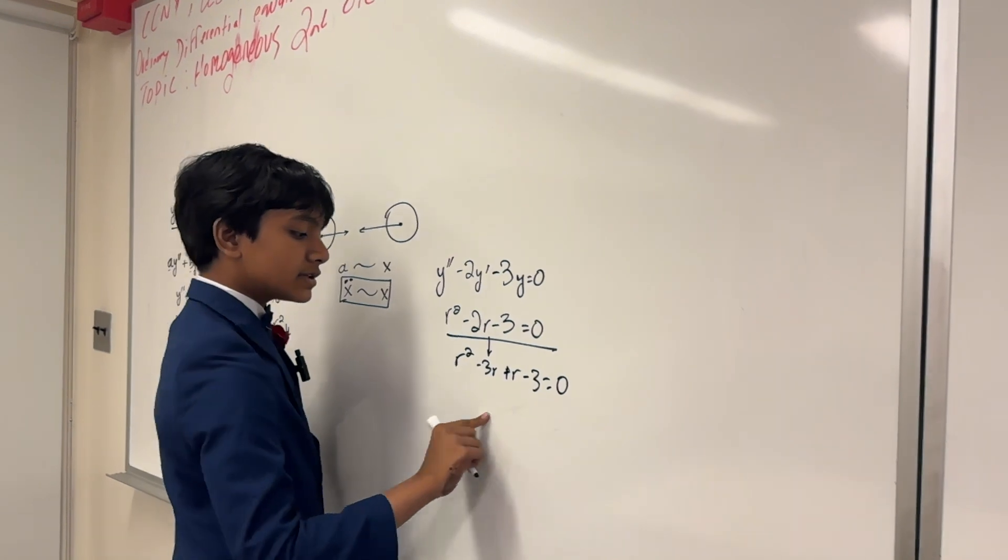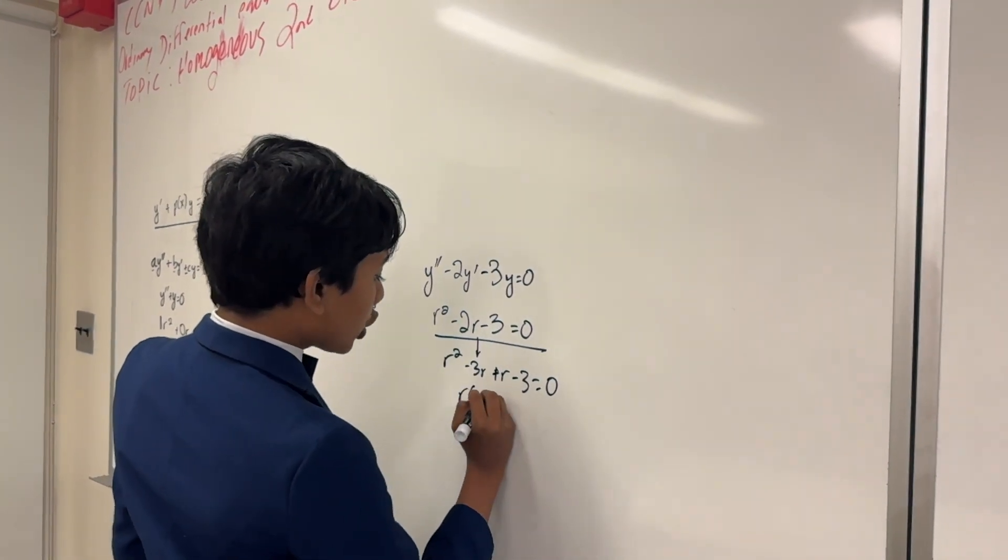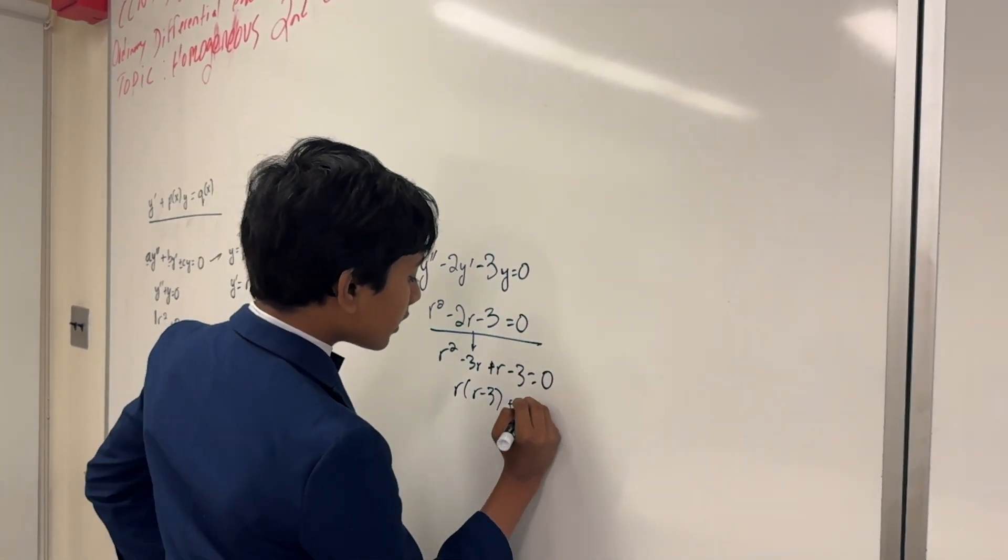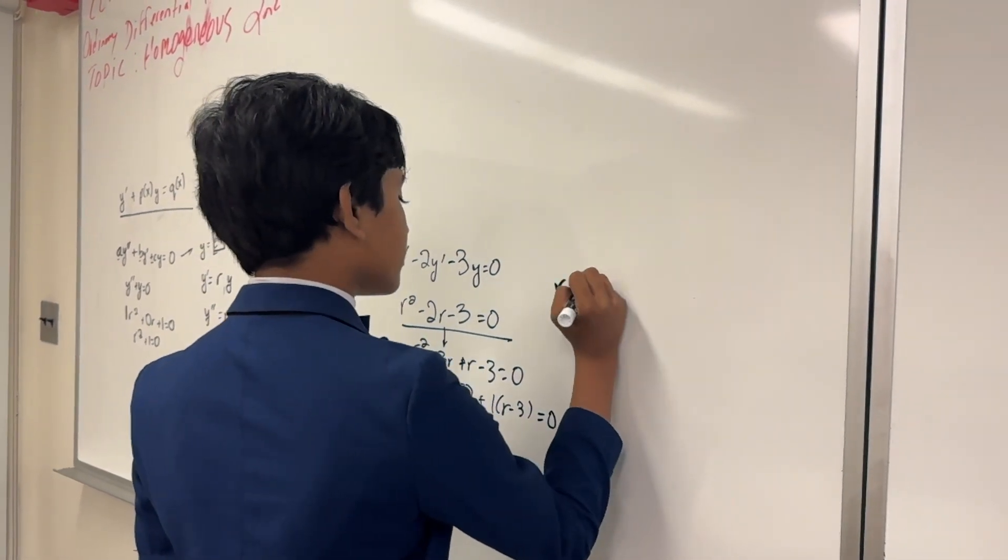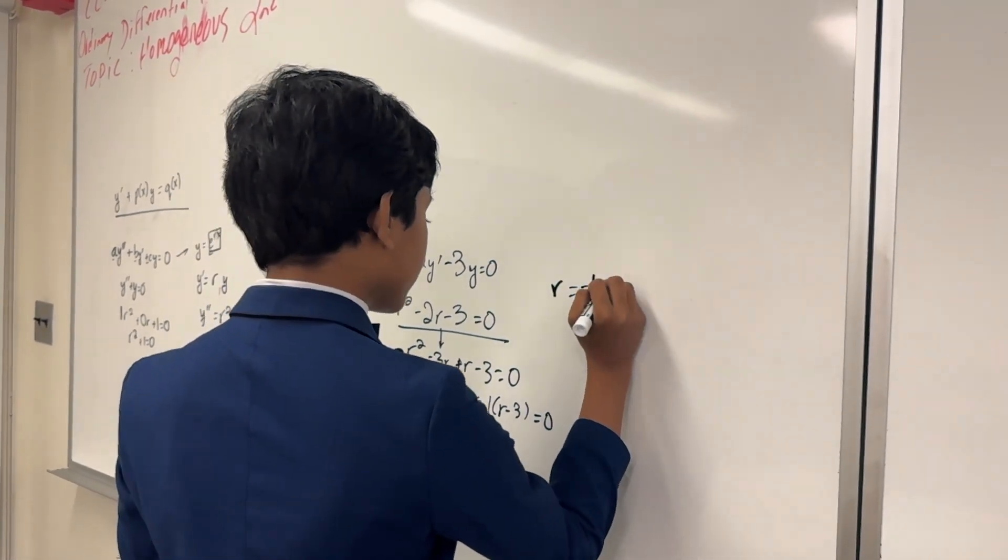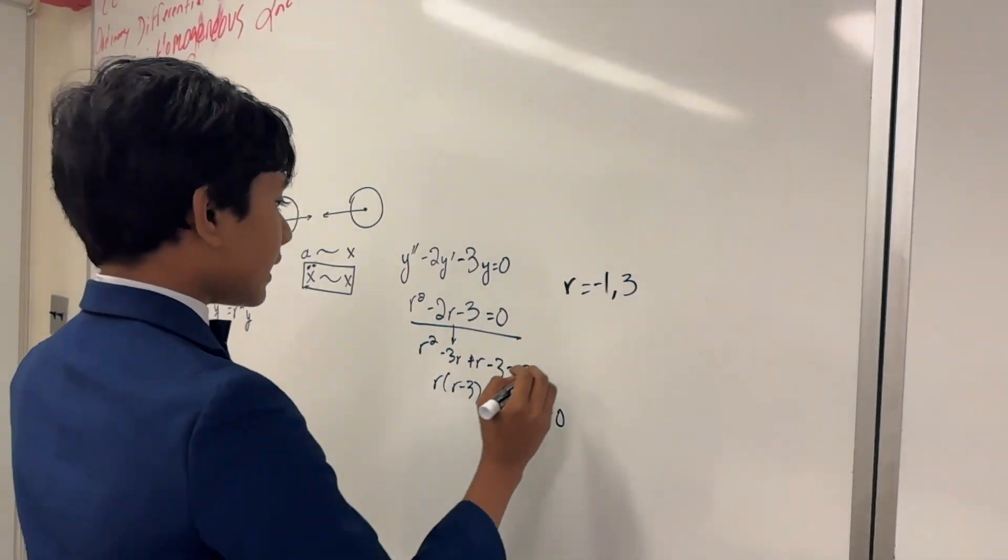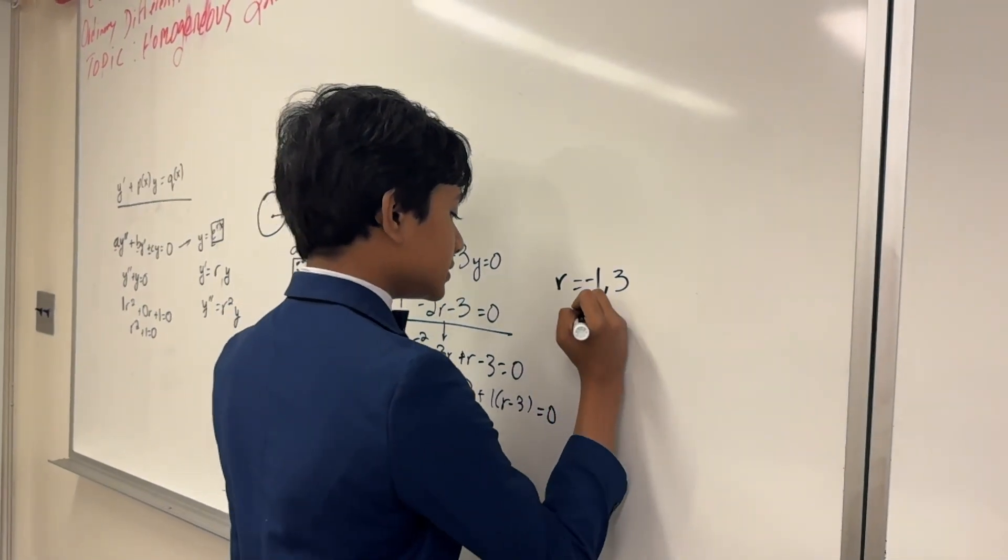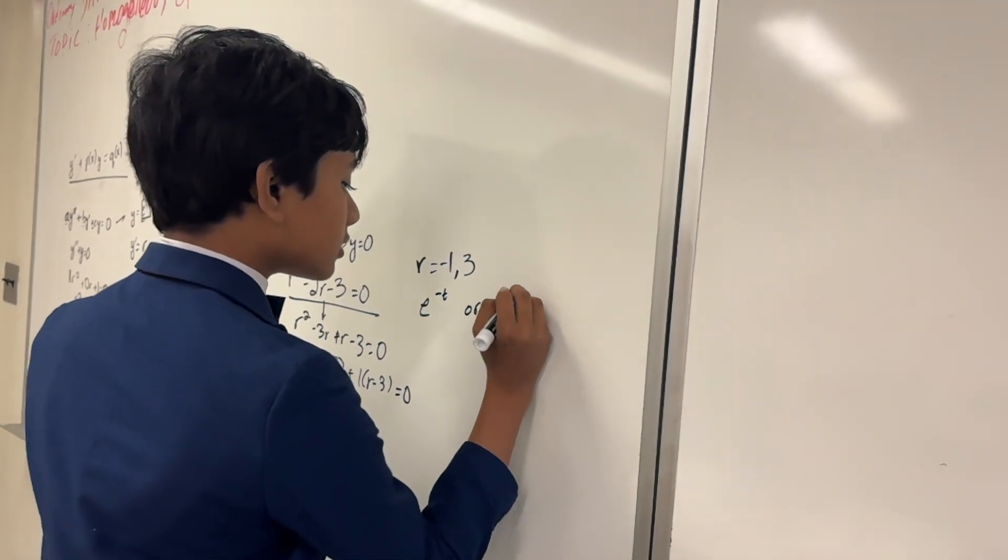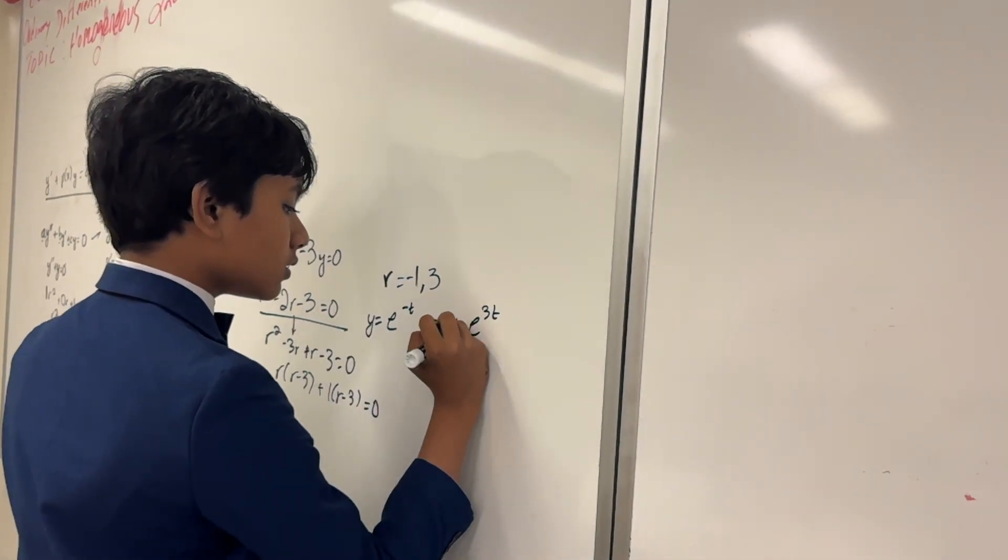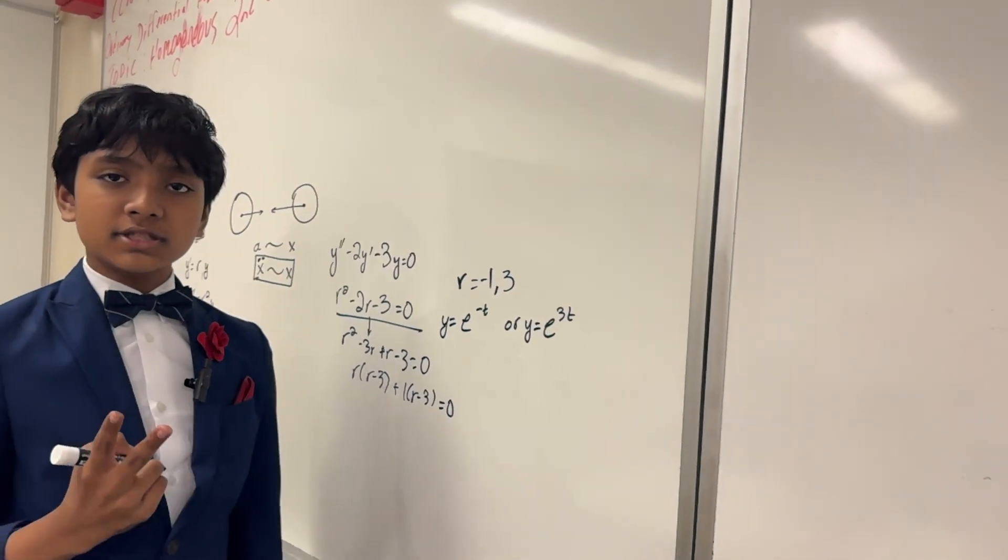Sorry, I intended for this to be a negative sign. So once we actually solve this equation, we get r times r minus 3 plus 1 times r minus 3, or in other words, the possible values of r are minus 1 or 3. So that means that our possible solutions are e to the minus t or e to the 3t. So those are our two solutions.